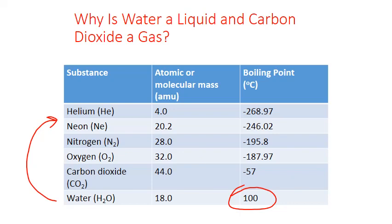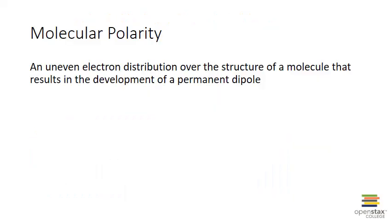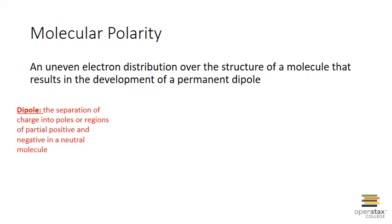The answer, of course, lies in molecular polarity. Water is a very polar molecule; carbon dioxide is not. Molecular polarity reflects an uneven electron distribution over the structure of a molecule that results in the development of a permanent dipole. A dipole is the separation of charge into poles — regions of partial positive and partial negative — in an overall neutral molecule.